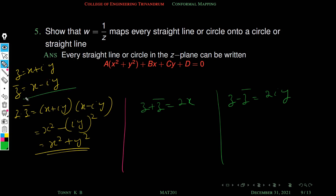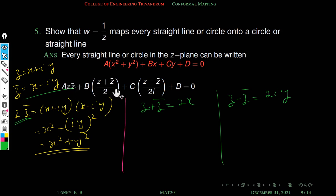We rewrite in terms of z: x² + y² = z·z̄, x = (z + z̄)/2, y = (z - z̄)/(2i). Substituting into the general equation gives: A·z·z̄ + B·(z + z̄)/2 + C·(z - z̄)/(2i) + D = 0.